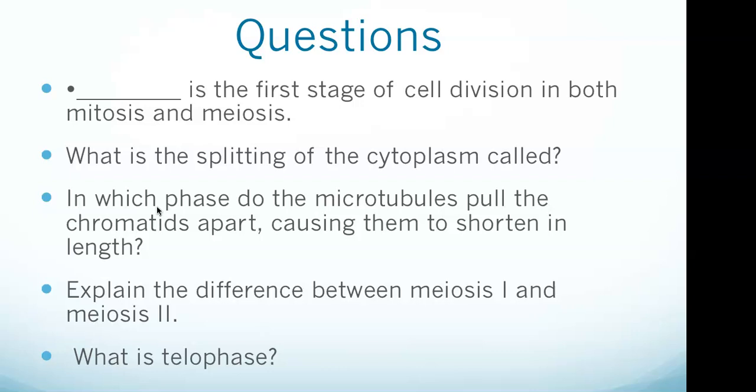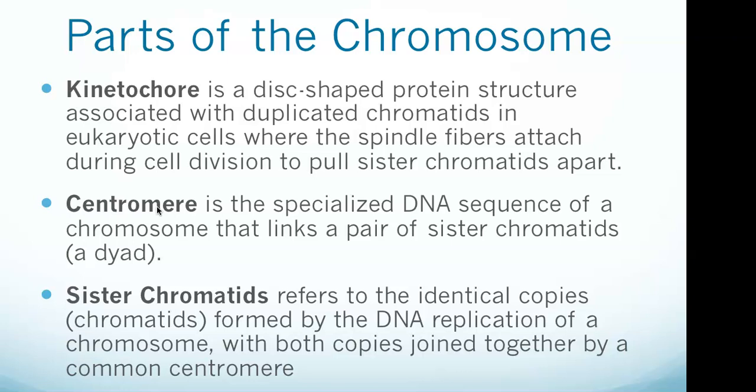We start with parts of the chromosome. The kinetochore is a disc-shaped protein structure associated with duplicated chromatids in eukaryotic cells, where the spindle fibers attach during cell division to pull sister chromatids apart. The kinetochore assembles on the centromere and links the chromosome to microtubule polymers from the mitotic spindle during mitosis and meiosis.